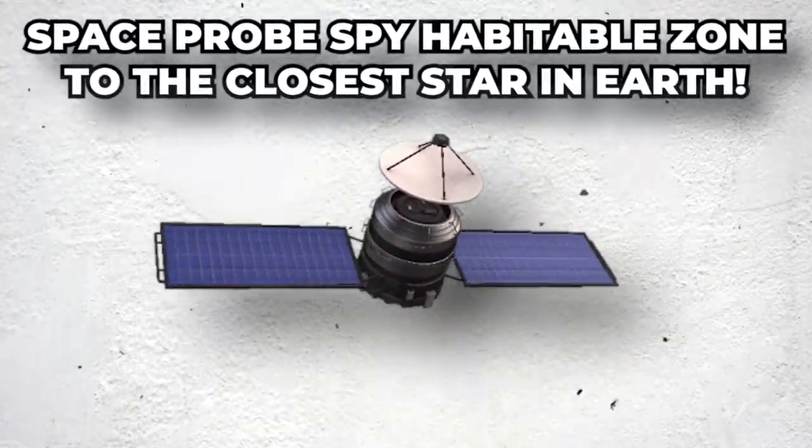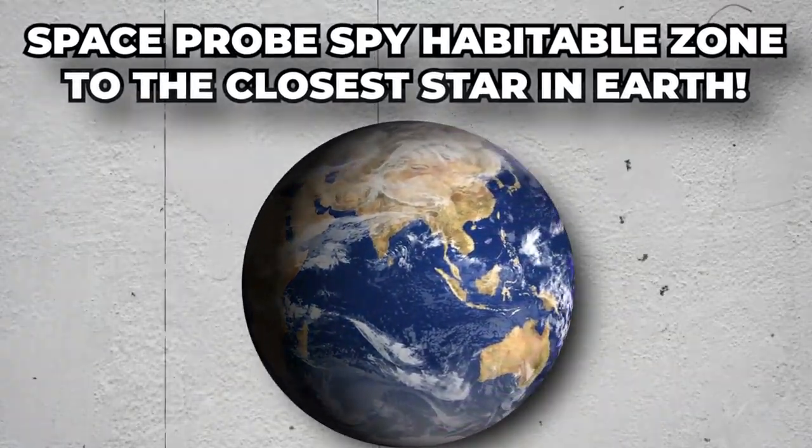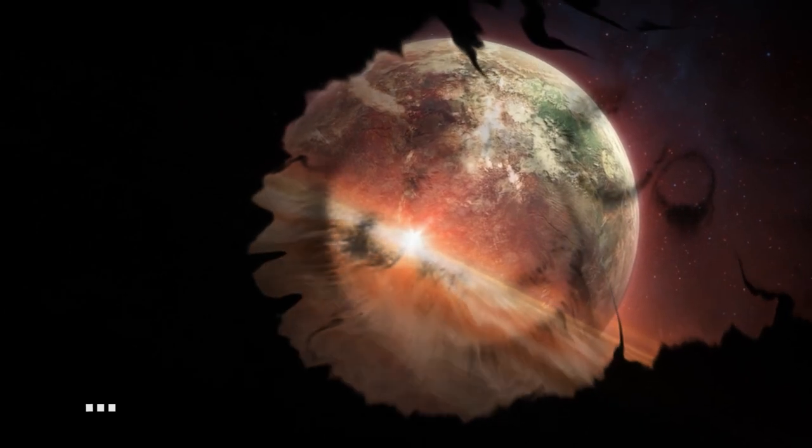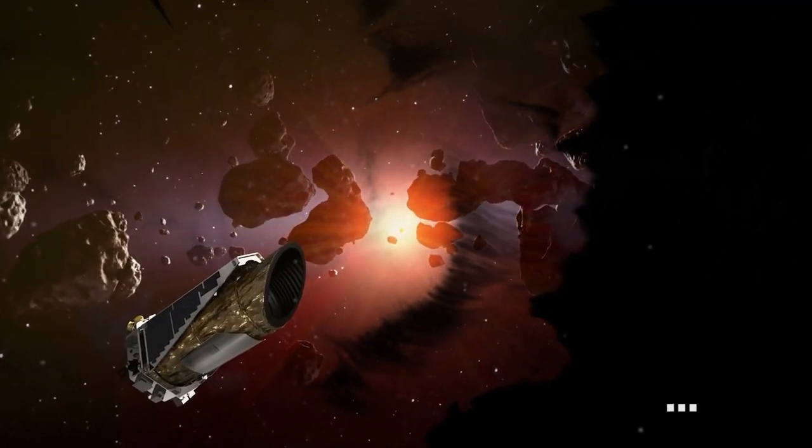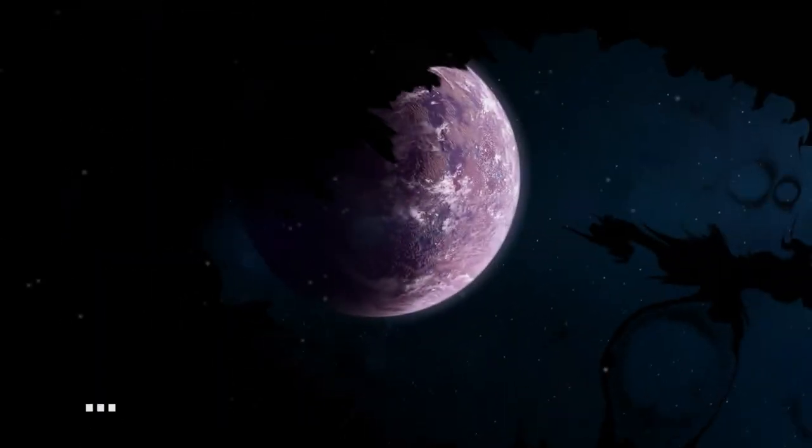Space probe spies habitable zone around the closest star to Earth. The potential candidate can be a mirage or a warm Neptune. In any case, it signifies the beginning of an astronomical revolution.